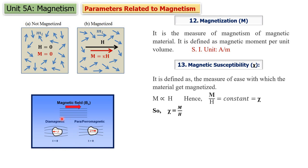On the other hand, where the flux lines are not passing through the material — in fact the flux lines are being repelled — the ease with which the material gets magnetized is very low, so the susceptibility of that material is less. Magnetic susceptibility chi measures the ease with which the material gets magnetized.